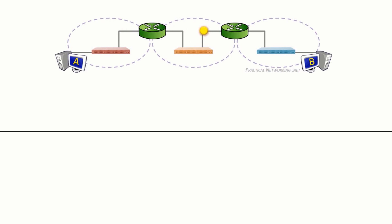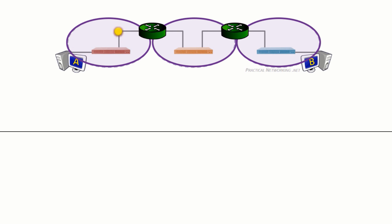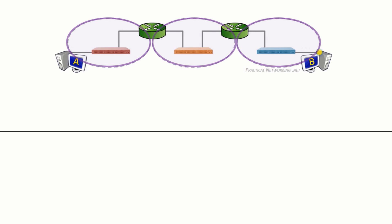This is a network topology with three switches and two routers. The routers create network boundaries, which means we have three total IP networks on this topology. The routers facilitate the communication between these networks, and the switches facilitate all the communication within these networks.